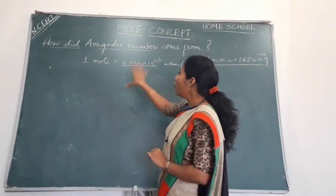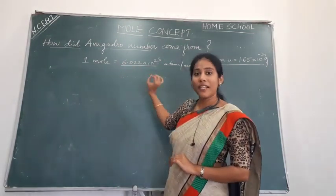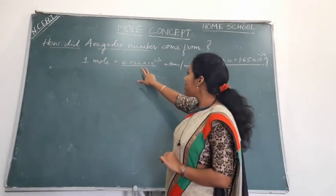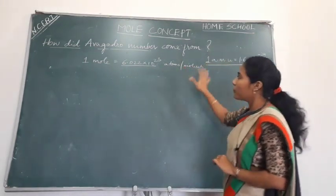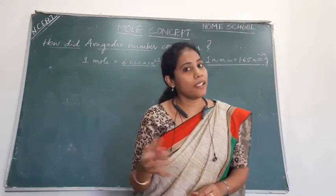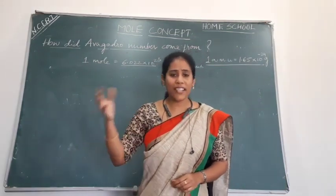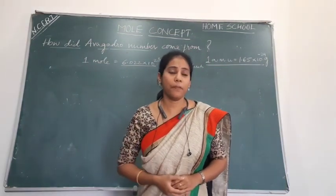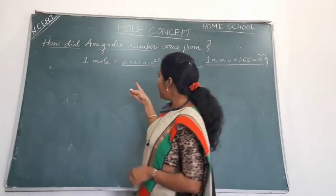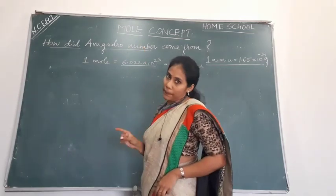We all know one mole is nothing but just a number — 6.022 into 10 to the power of 23 particles. In chemistry, the particles are nothing but atoms, molecules, ions, or whatever. This number we famously call Avogadro number.